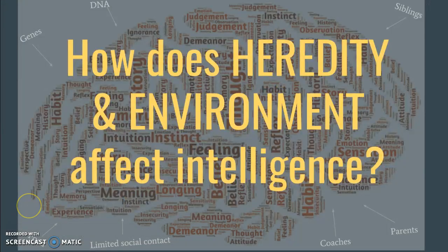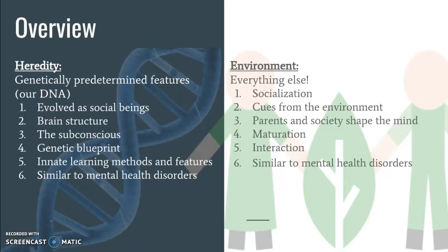So how does heredity influence intelligence? Different approaches suggest that heredity — aka nature — affects intelligence as follows: humans evolved as social beings and the brain structure itself is related to genetics. The subconscious shapes the ego and superego. The genetic blueprint is linked to hormones and neurotransmitters, which can all lead to innate learning methods and features. Some people are also predisposed to mental health disorders, which can negatively impact their intelligence.